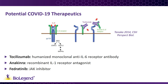A second treatment approved for rheumatoid arthritis and being explored for treating COVID-19 is anakinra. Anakinra is a recombinant version of the IL-1 receptor antagonist. Native IL-1 receptor antagonist has the effect of blocking IL-1 from binding the IL-1 receptor and initiating downstream signaling. Similar to tocilizumab, the thinking is that anakinra might be another effective way of reducing inflammation and bringing the immune response into balance.